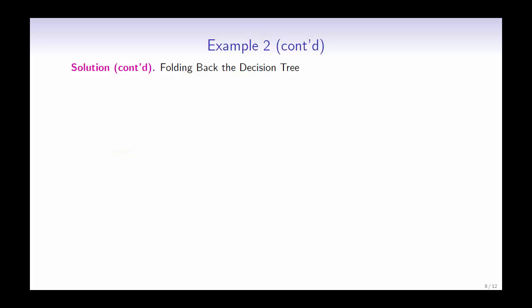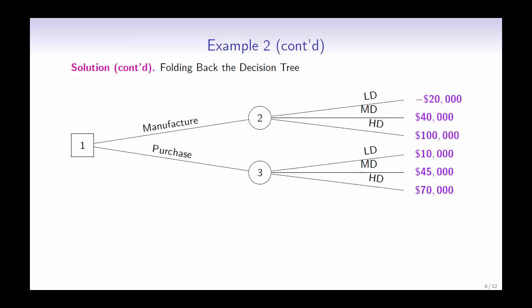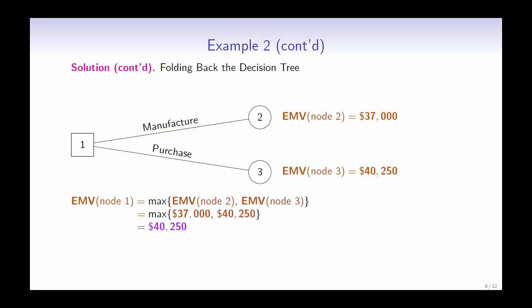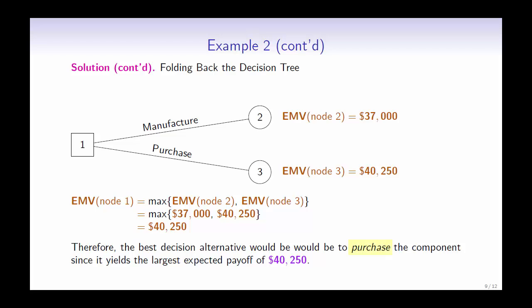So when we are folding back the decision tree, we need to first look at the payoff at each outcome, then multiply it by the probability of each outcome, which will give us the expected payoff at each outcome node. Now we can make a decision based on the expected payoff. Since we would want to maximize profit, the best decision would be the outcome with the largest expected payoff. Therefore, the best decision alternative would be to purchase the component, since it yields the largest expected payoff of $40,250.